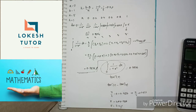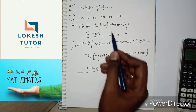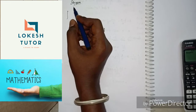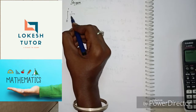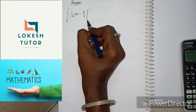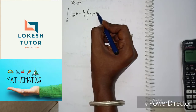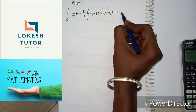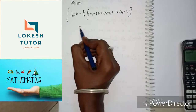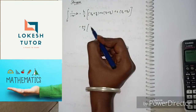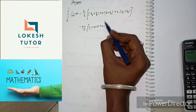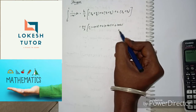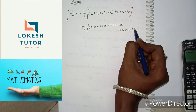Now applying Simpson's rule. The integral from 0 to 1 of 1 by 1 plus x squared dx equals H by 3 into (first plus last) plus 4 into sum of odd ordinates plus 2 into sum of even ordinates. So: 0.2 by 3 into (y0 + y5) = (1 + 0.5), plus 4 into (y1 + y3) = (0.9615 + 0.7352), plus 2 into (y2 + y4) = (0.8620 + 0.6097).